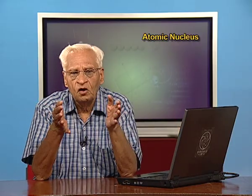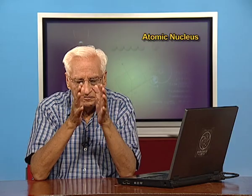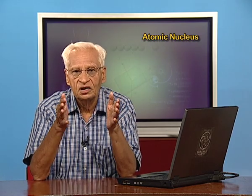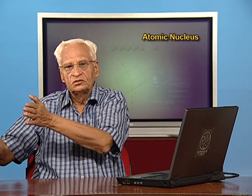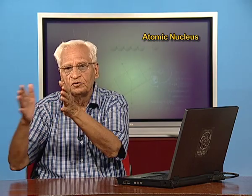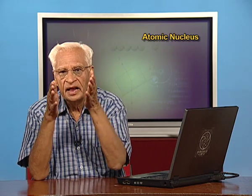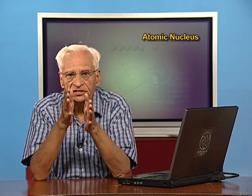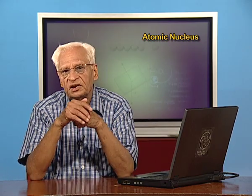In the next lecture, we shall continue with the stability of nuclei and also see why both protons and neutrons are necessary for nuclear stability. We shall also discuss radioactivity, including mean life and half life. In this lecture, we have concentrated on binding energy per nucleon, which helps us identify where nuclei are most stable. Heavy nuclei approach the stable band by fission; light nuclei approach it by fusion and become more stable.